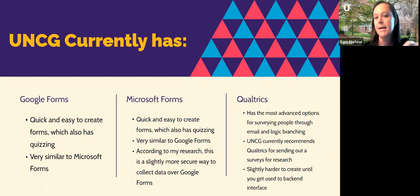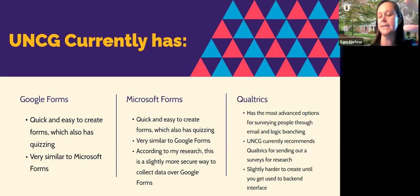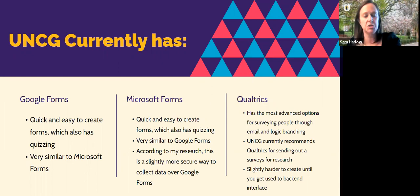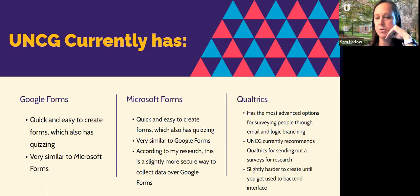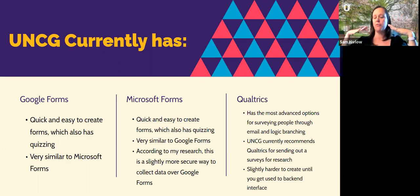Qualtrics is a different kind of tool. It has a lot more question options — hot spotting, Likert scales, all kinds of ways to ask questions. It has more advanced options for how you send out a survey, including email and social media, so for a national campaign it's definitely recommended. It also has more options for logic branching. UNCG currently recommends Qualtrics for sending out surveys for research — if you go through the IRB process, you would use Qualtrics.